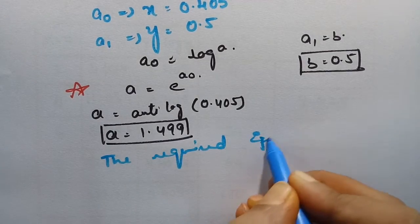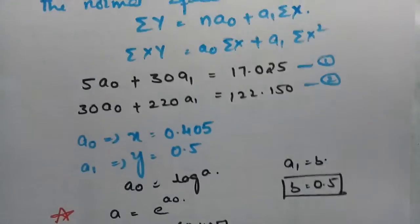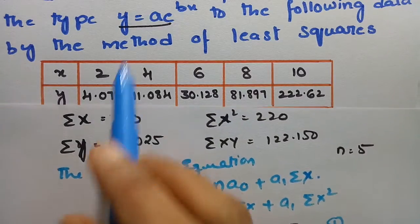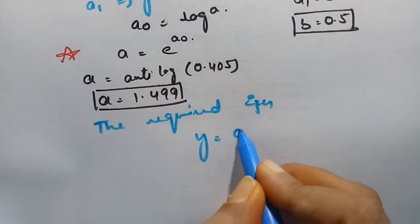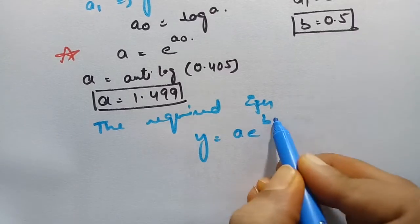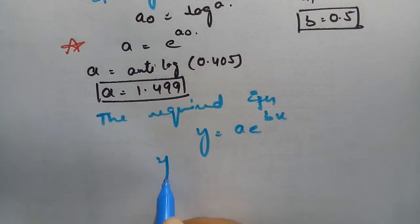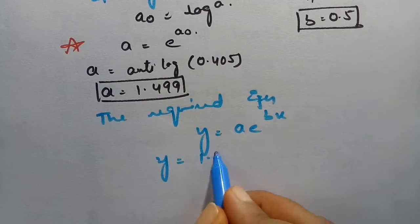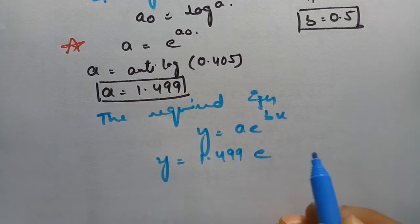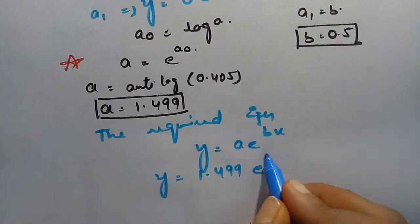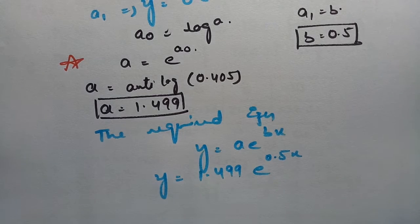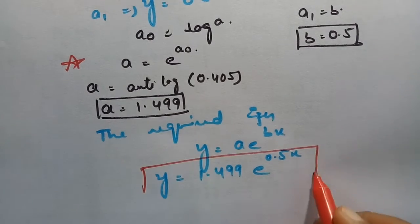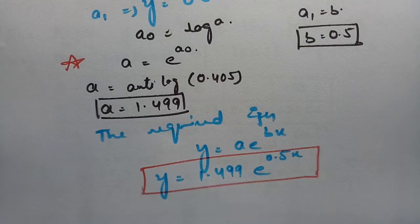Therefore the required equation (curve of best fit) is: y = a·e^(bx), which gives y = 1.499·e^(0.5x). This is the final answer.